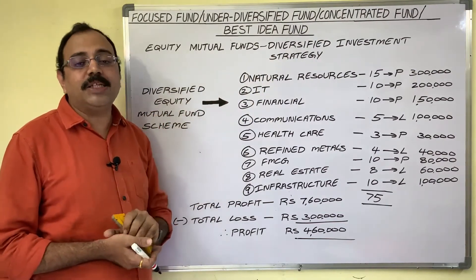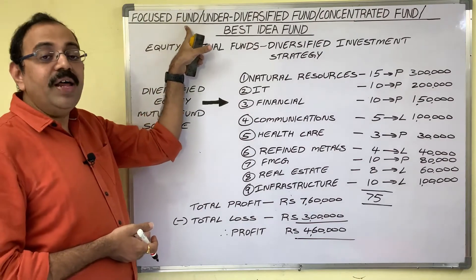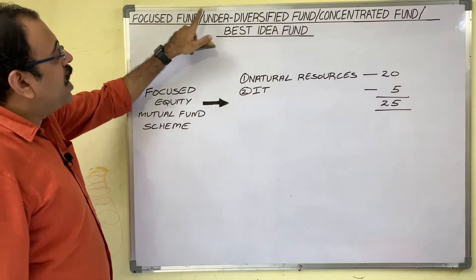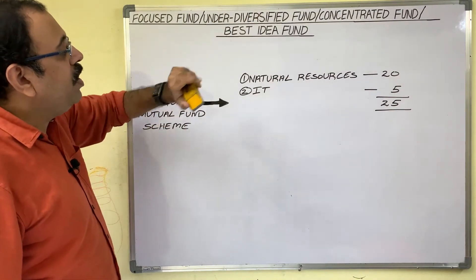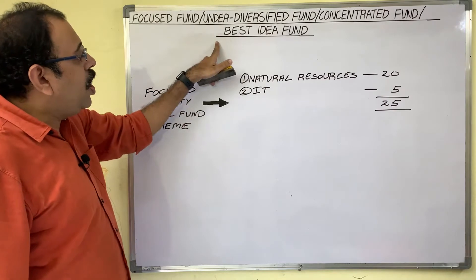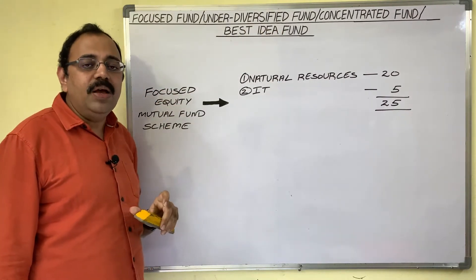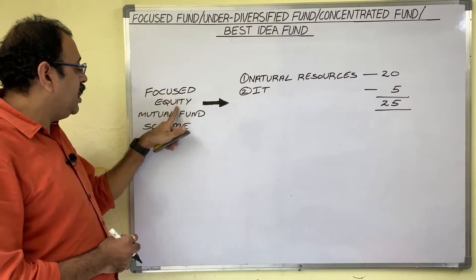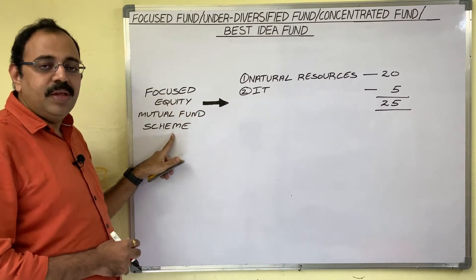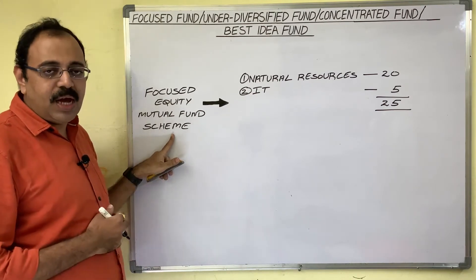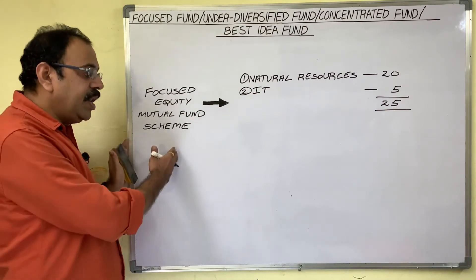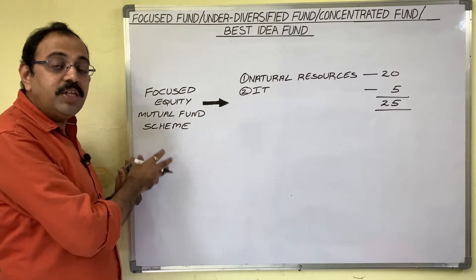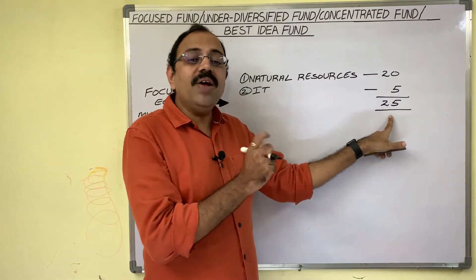Financial experts recommend focused funds for that type of investor. A focused fund is also known as an under-diversified fund, concentrated fund, or best idea fund. For example, one asset management company launched a focused equity mutual fund scheme and collected corpus from investors.